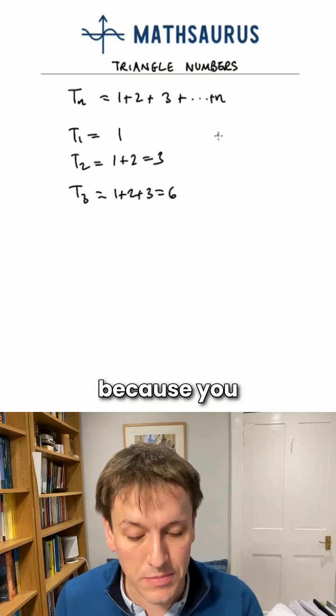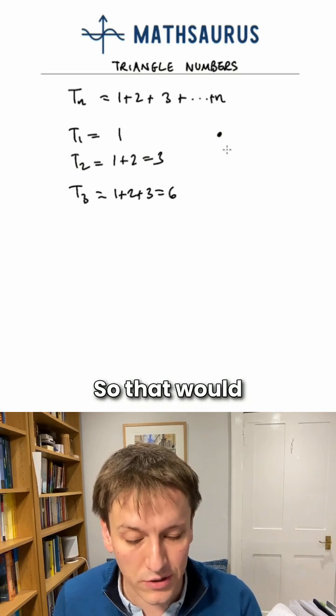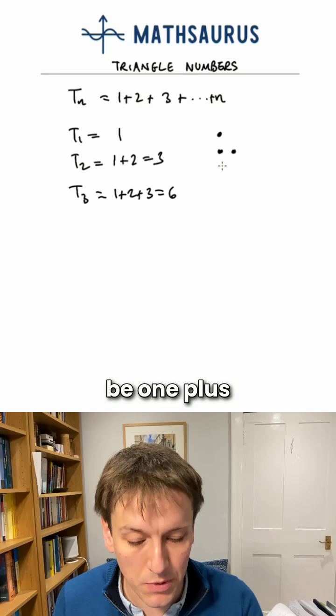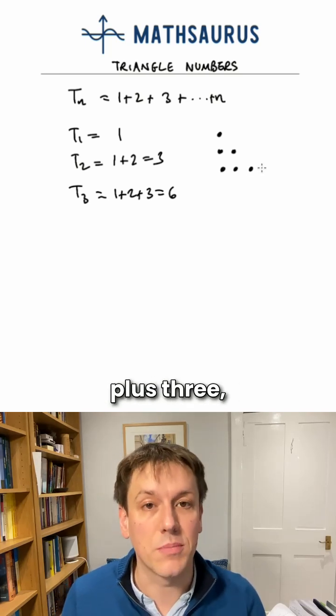And so on. And we call them triangle numbers because you could arrange them into triangles. So that would be the first one, the second would be 1 plus 2 is 3, and the third one would be 1 plus 2 plus 3, which is 6.